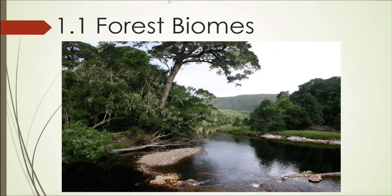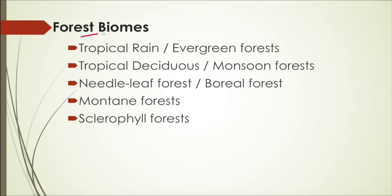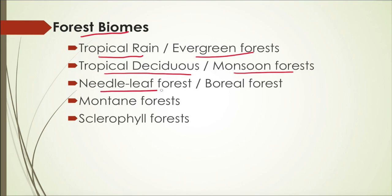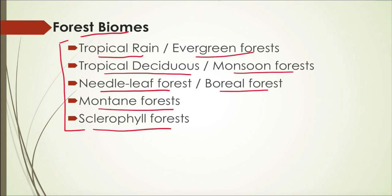Starting with forest biomes, which deals with the forest area — what kinds of forest areas we have on earth. Forest biomes can further be of different types: tropical rainforest or evergreen forest, tropical deciduous or monsoon forest, needle-leaf or boreal forest, montane forest, and sclerophyll forest. These are the five types of forest biomes we will discuss in further slides.